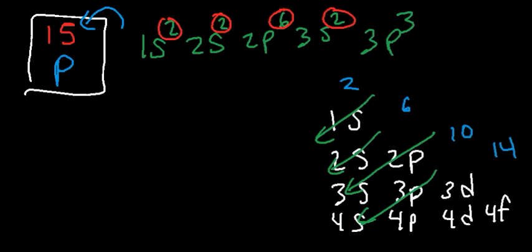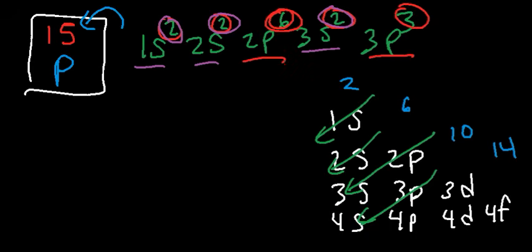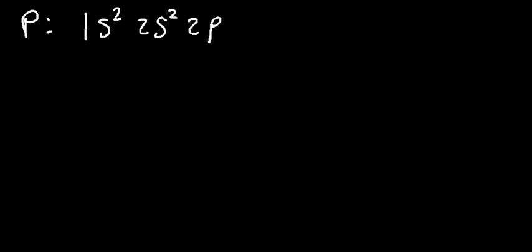If you're asked how many S electrons are in phosphorus, add up the S exponents — there are six S electrons. If they ask how many P electrons, add the P electrons: six plus three gives nine P electrons in phosphorus. The electron configuration for phosphorus is 1S2, 2S2, 2P6, 3S2, and 3P3.